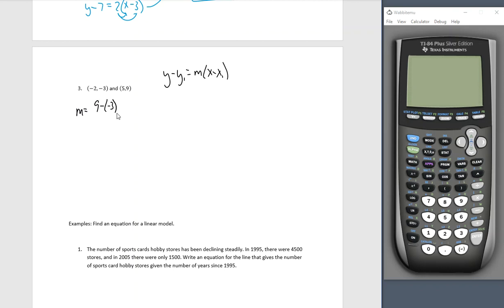So I have the point negative 2, negative 3 and the point 5, 9. So my slope, always find the slope first. 9 minus a negative 3 over 5 minus a negative 2. 9 plus 3, right? Subtracting a negative turns into addition in both circumstances. 9 plus 3 is 12. 5 plus 2 is 7. That's right. We'll deal with it.